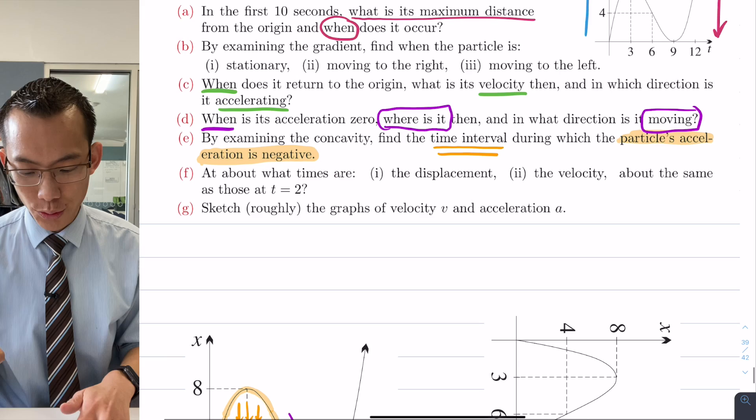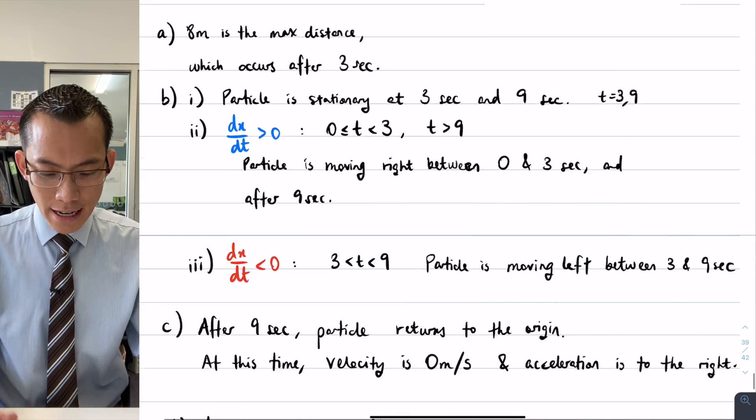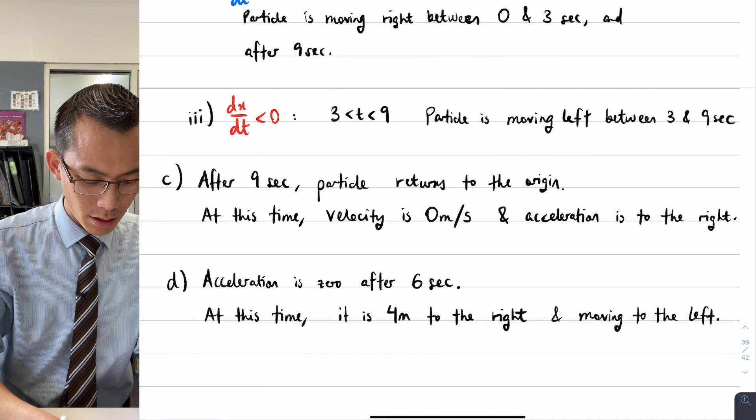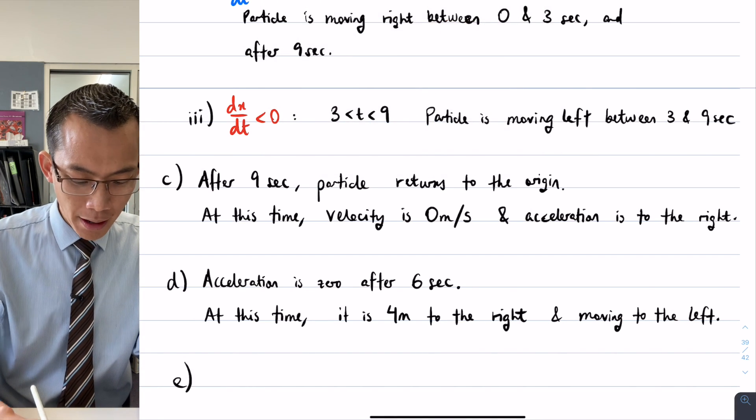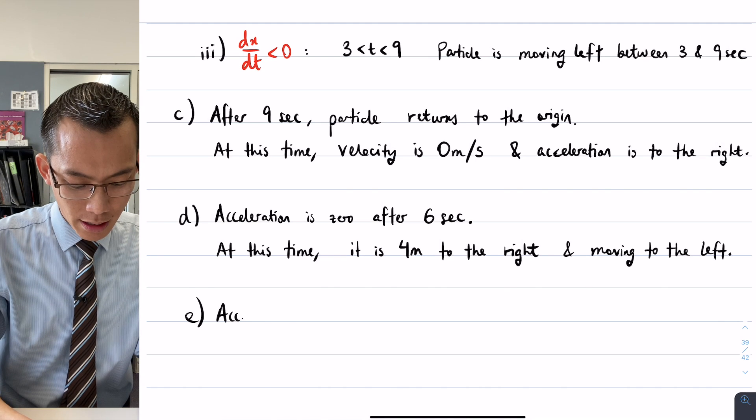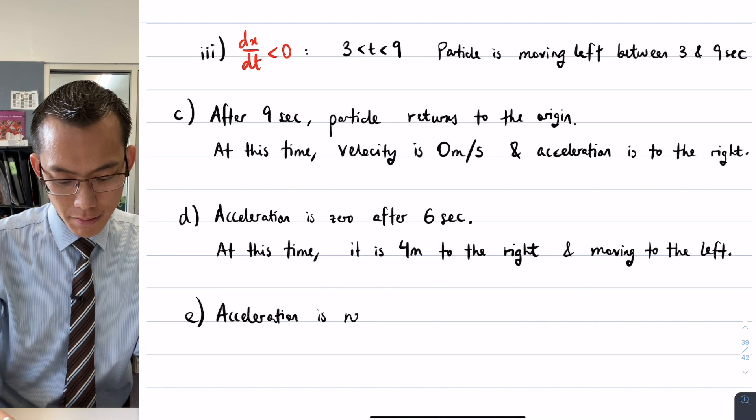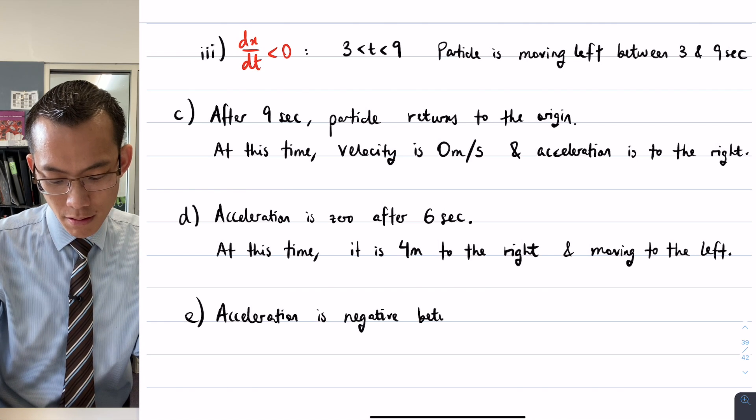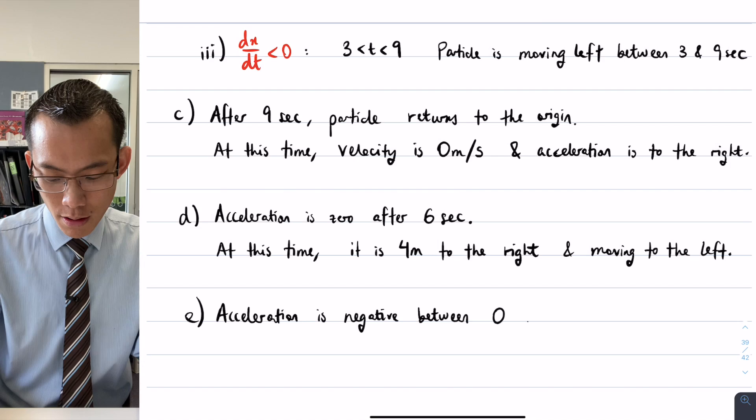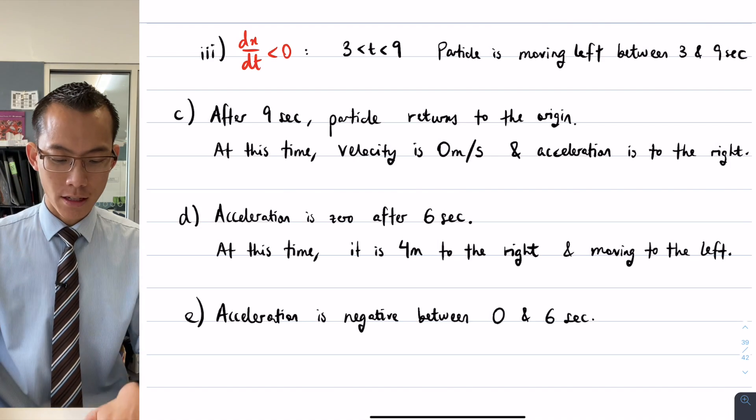This is the time interval during which the particle's acceleration is negative. I'll write that down and then we'll just quickly interpret that. So part E, acceleration is negative between zero and six seconds. There's my interval, my time interval.